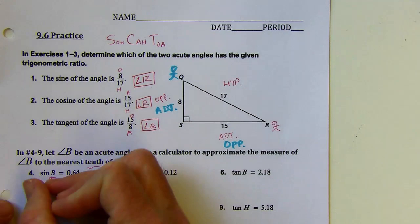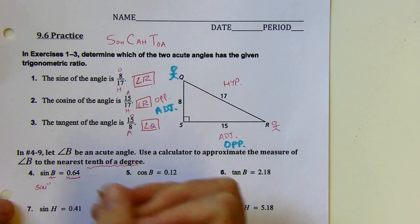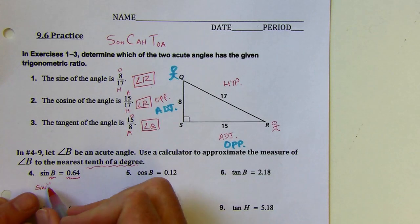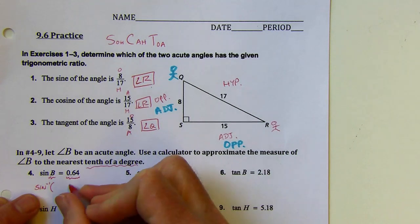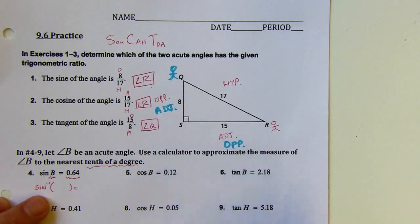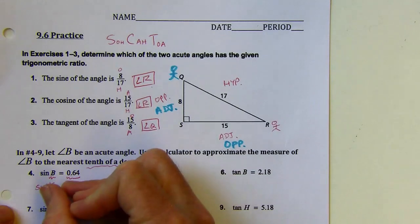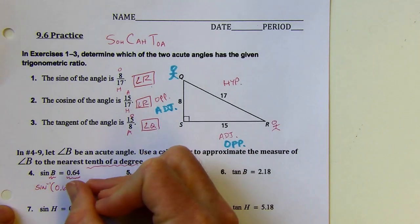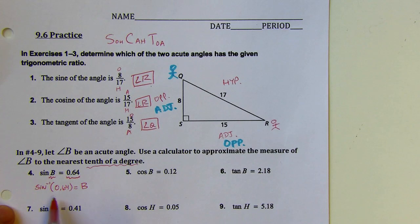The way I write the inverse sine is with the negative one exponent notation. Those two things switch positions when I apply the inverse sine, so this would be the inverse sine of 0.64 equals B. Now I have something I can plug into my calculator.